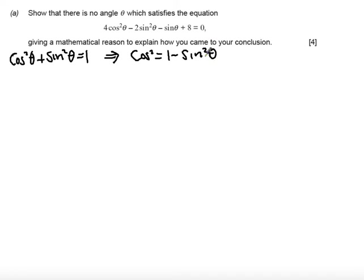Now by substituting this into the quadratic I'll have a quadratic in just sin. So we get 4(1 - sin²θ) - 2sin²θ - sinθ + 8 = 0.